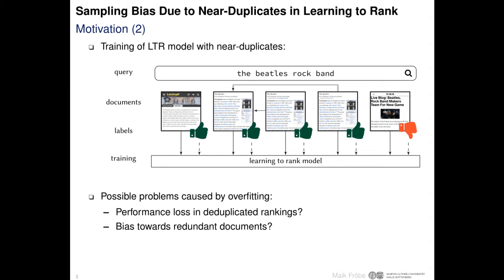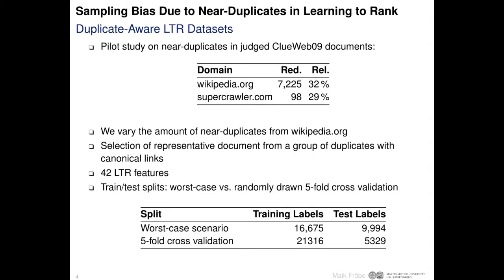We study two problems that may be caused by such overfitting due to near-duplicates. First, we ask whether there is a performance loss in de-duplicated rankings. And second, is there a bias towards redundant documents? To answer our questions, we build a duplicate-aware learning to rank dataset based on the ClueWeb09, which has deeply judged topics and more relevance judgments than its successor.